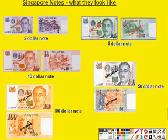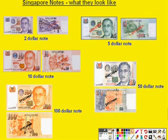Purple for the 2 dollar note. Green for the 5 dollar note. Red for the 10 dollar note. Blue for the 50 dollar note. And orange for the 100 dollar note.